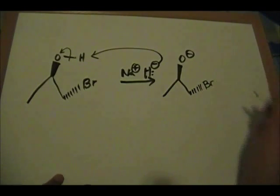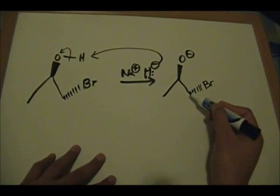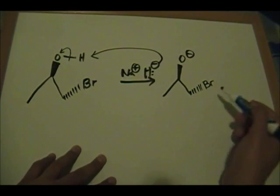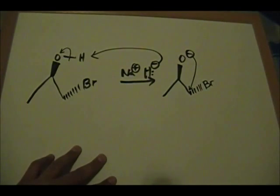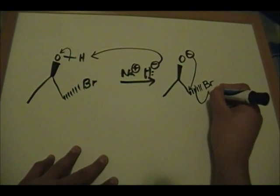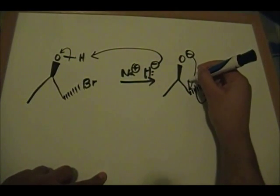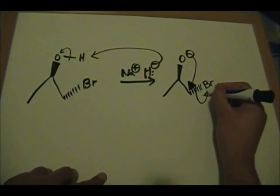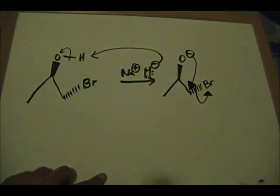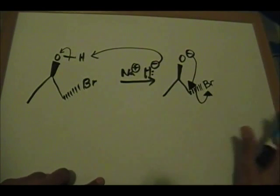What happens now is you form a bond with the carbon that the halogen is attached to, while kicking off the bromine and the pair of electrons. Let's draw these arrows a little bit darker so you can see.